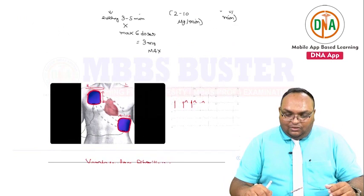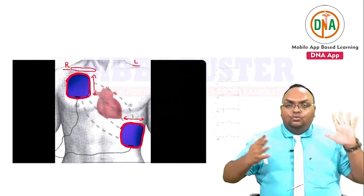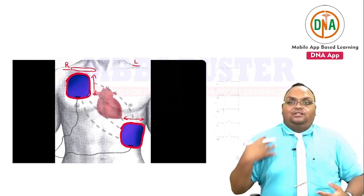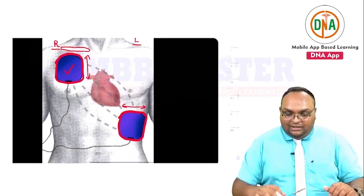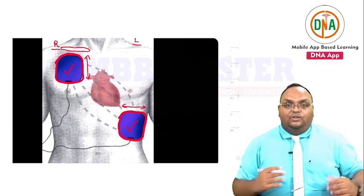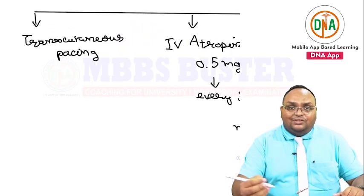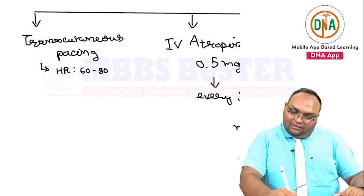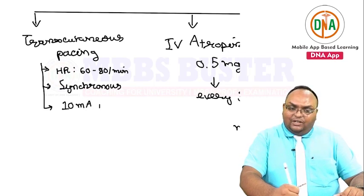For transcutaneous pacing, two electrode patches are placed on the skin. One is placed vertically below the right clavicle, infraclavicularly. The second is placed horizontally below the left nipple or at the level of the left nipple. The goal is to maintain a heart rate of 60 to 80 beats per minute synchronously. You increase the amperage of the device by 10 milliamperes until you get a capture beat.